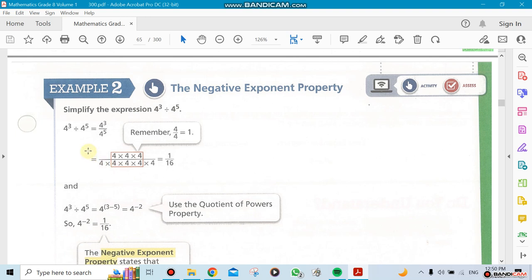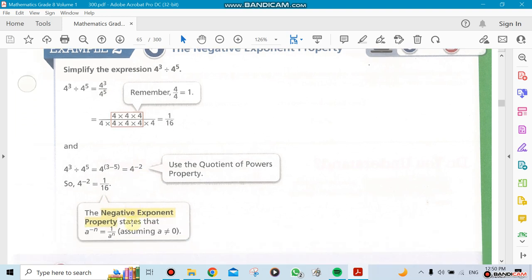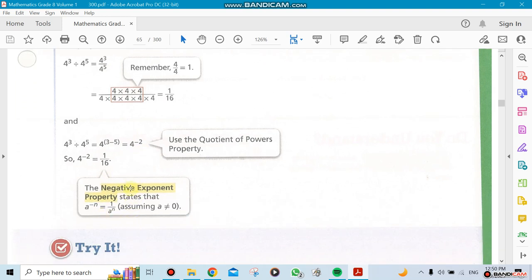For example here, you have 4 to the power 3 divided by 4 to the power of 5. When you subtract, you subtract 3 minus 5, which is negative 2. So 4 to the power of negative 2, how do we handle it?